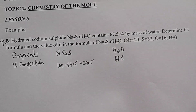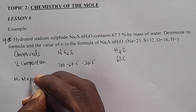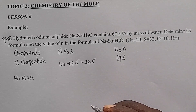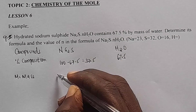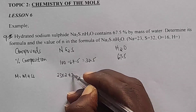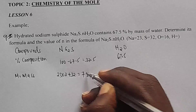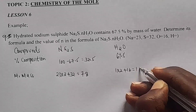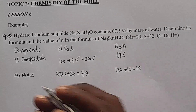Next, let's go and get the molar mass — the relative formula mass. For sodium sulfide Na₂S: sodium is 23 times 2, plus 32 for sulfur, this will be 78. For water: 1 times 2 plus 16, this will be 18. That will be the molar mass.